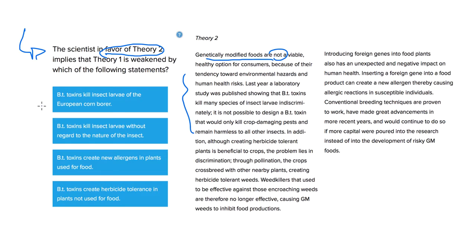So let's go ahead and consider the answer choices. Answer choice A: BT toxins kill insect larvae of the European corn borer. If you take a look at Theory 2, we never once mentioned European corn borer. This is an example of something cited in Theory 1, but it's not mentioned in Theory 2 at all, so we can go ahead and get rid of that.